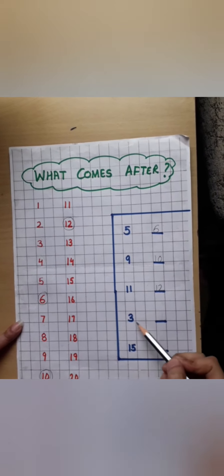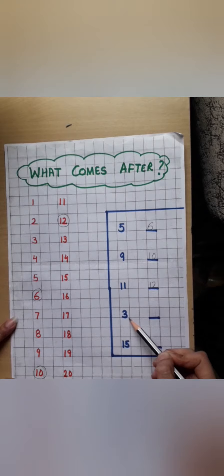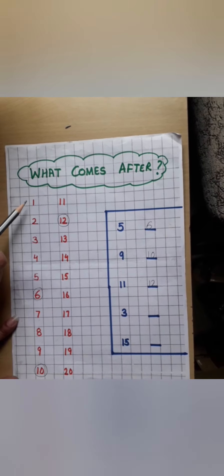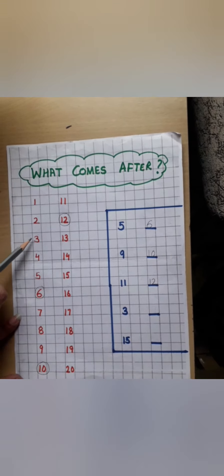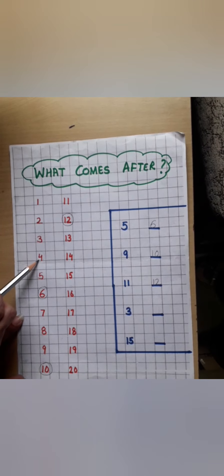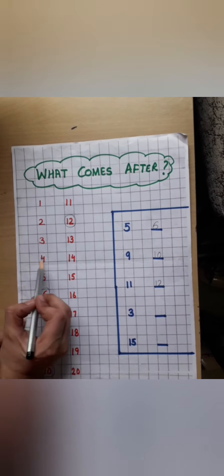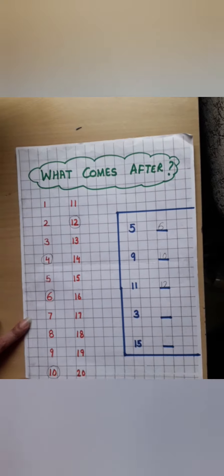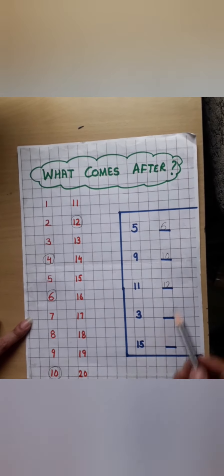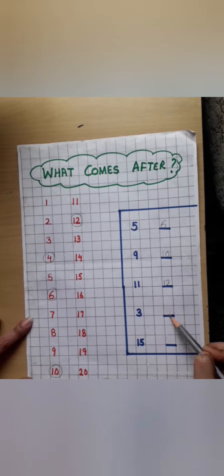Now our next number is the number 3. Very good. Do the counting. 1, 2, 3. And the next number. Very good. The number 4. What you will do? You will write the number 4 here. Very good.